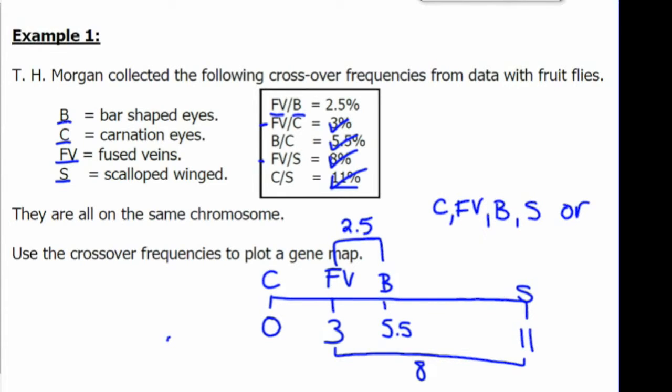It can also be read the other way. So it's also correct to say that the genes are in the order S, B, FV, and C.